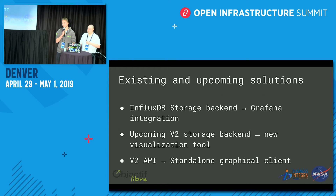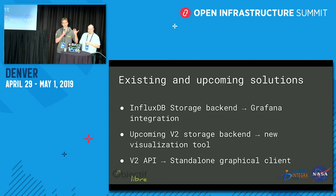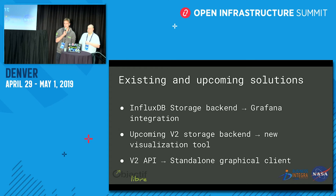Now about existing solutions in Stein, which have been added recently: the first thing is the InfluxDB storage driver, so you can directly plug a Grafana dashboard on Cloud Kitty's InfluxDB storage backend. There will probably be a second Cloud Kitty storage driver — it isn't fixed for now, but it will probably be Elasticsearch, so you would have Kibana to visualize your data. For users who use Cloud Kitty outside of OpenStack, we plan to add a graphical client. This one might contain more advanced charts, but not as complex as Grafana — still something for people who don't want to bother with the Grafana and InfluxDB combination.